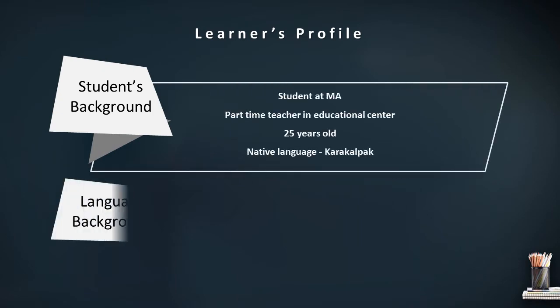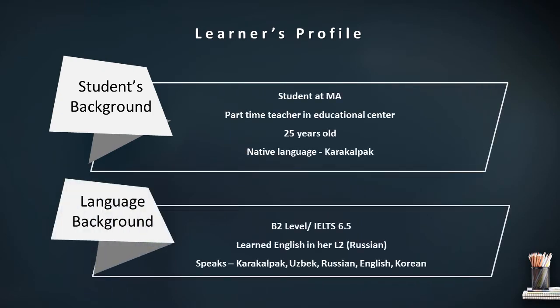Here in the learner's profile, there is some information about my target student. My target student is 25 years old and she is currently studying at master's degree at Webster University. She is a part-time teacher in an educational center and she is from Karakalpakstan. Her native language is Karakalpak. She has been learning English for almost 10 years and her current level is B2, with an IELTS band score of 6.5.